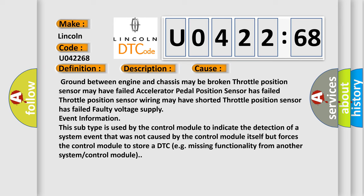Faulty voltage supply event information. This subtype is used by the control module to indicate the detection of a system event that was not caused by the control module itself but forces the control module to store a DTC, e.g. missing functionality from another system or control module.